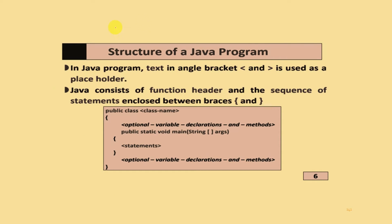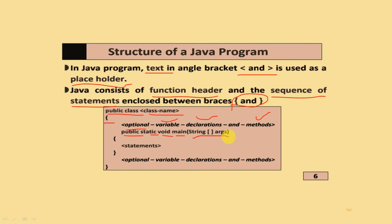The structure of a Java program: text in angular brackets is used as a placeholder. Java consists of a function header and a sequence of different statements enclosed between curly brackets. First, define the public class and write the class name, then open the curly bracket. After that, you use optional variable declarations and add different methods - specifically public static void main(String args[]) - and write your statements within curly brackets. The optional variable declarations and methods can be placed at the top or bottom section.